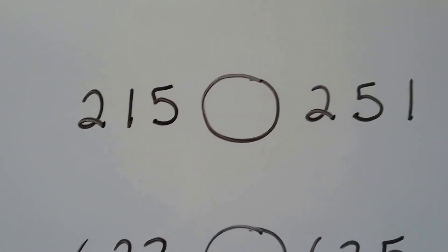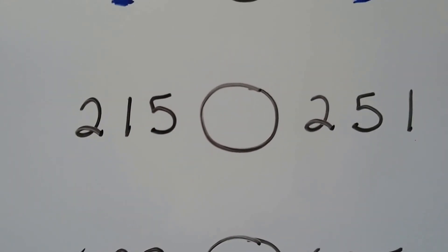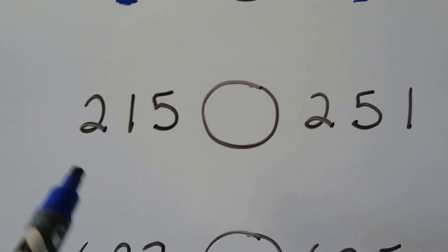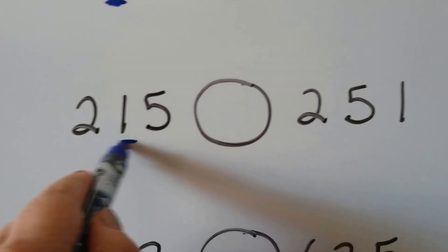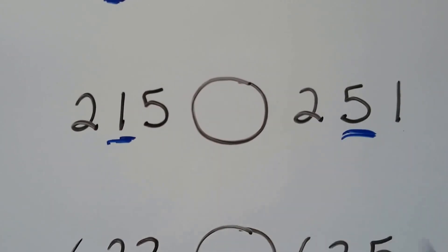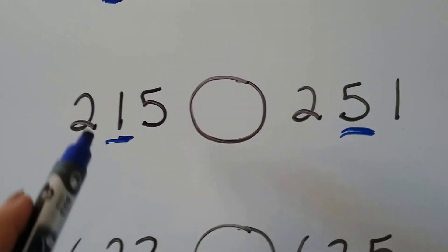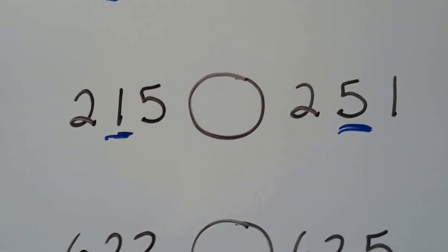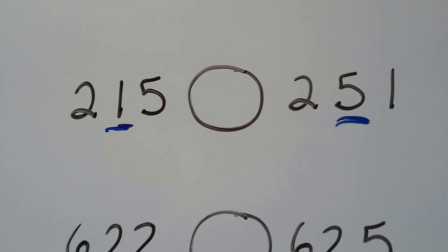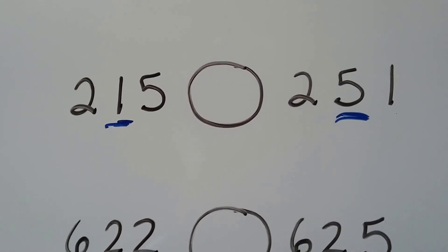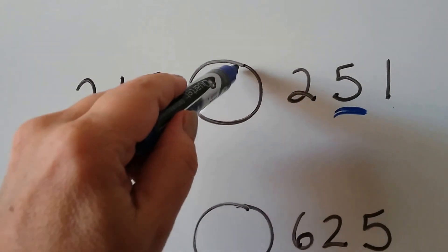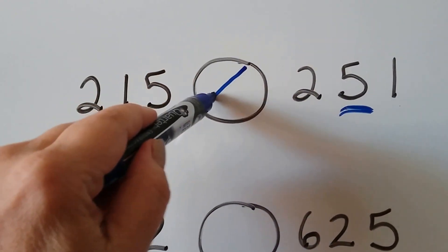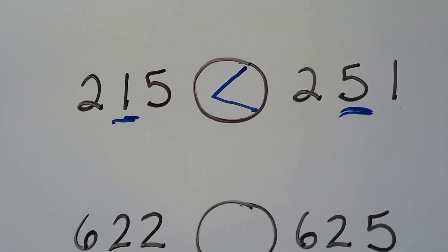Let's try this one: 215 or 251. They both have a two in the hundreds place, so let's look at the tens place. This has one ten, this has five tens. Big mouth eats the big number, so the big mouth faces that way. So 215 is less than 251.